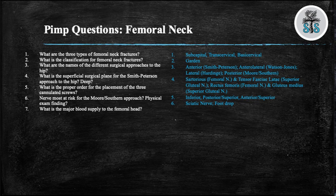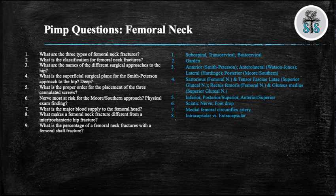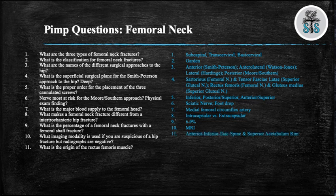Question 7: What is the major blood supply to the femoral head? The medial femoral circumflex artery. Question 8: What makes a femoral neck fracture different from an intertrochanteric hip fracture? Intracapsular versus extracapsular. Question 9: What is the percentage of femoral neck fractures with an associated femoral shaft fracture? 6 to 9 percent. Question 10: What imaging modality is used if you're suspicious of a hip fracture but radiographs are negative? An MRI to rule out occult fracture. Question 11: What are the two origins of the rectus femoris muscle? The anterior inferior iliac spine and the superior acetabular rim.